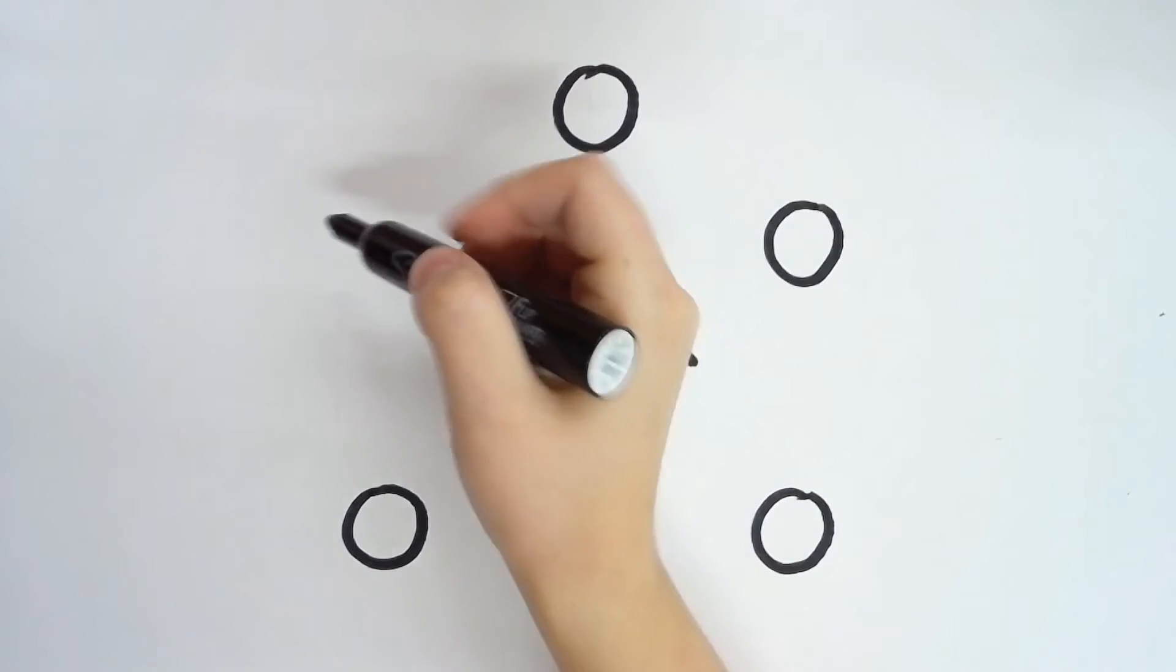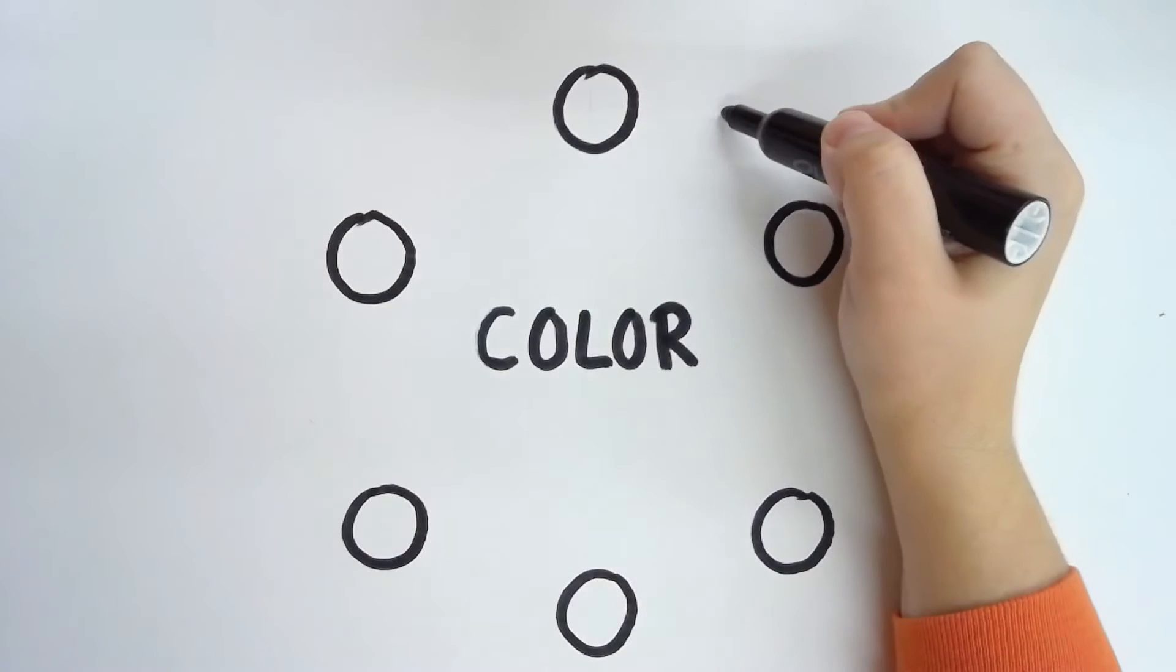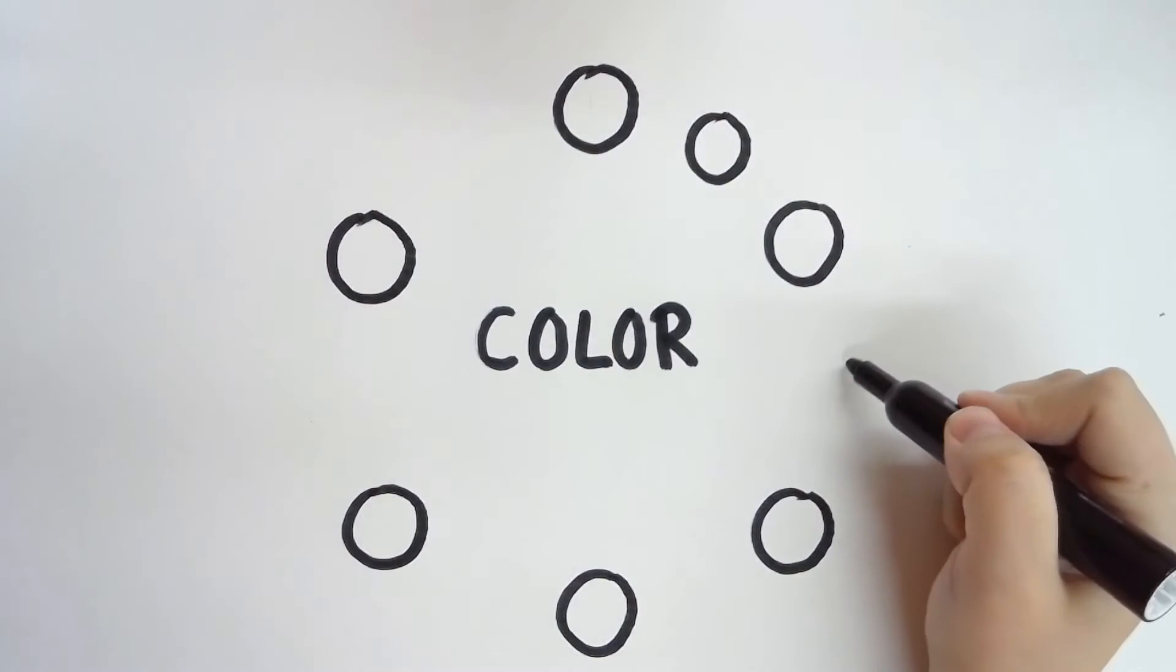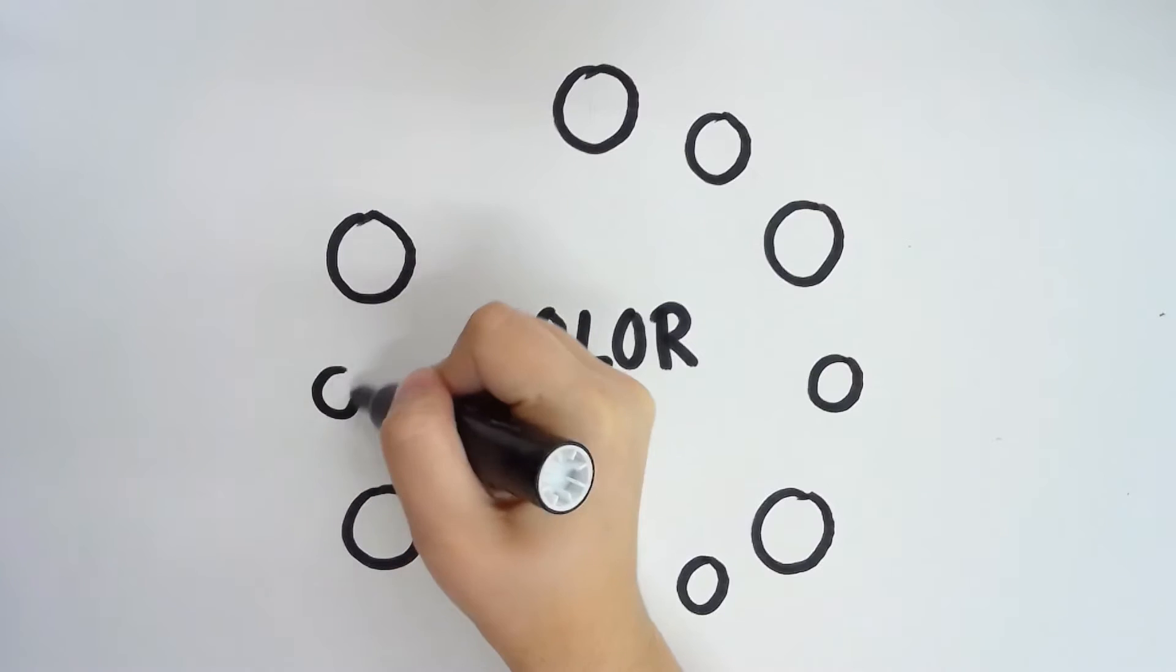And a standard color wheel has 12 colors in it. It has the three primary colors, the three secondary colors, and then it has a bunch of these in-between colors. And we call them tertiary colors.